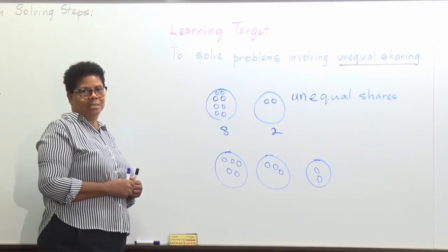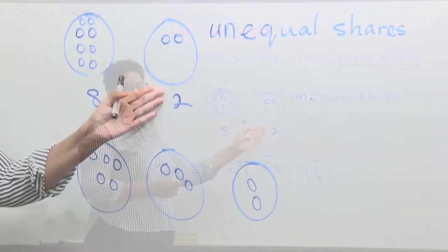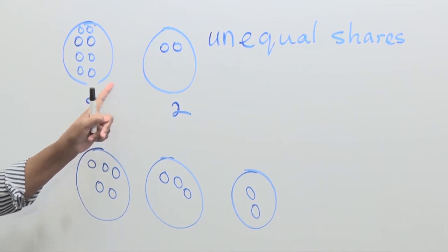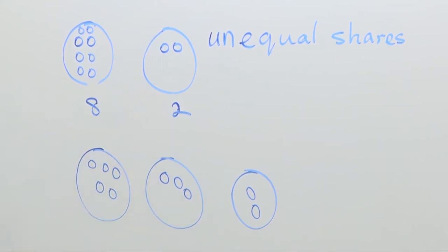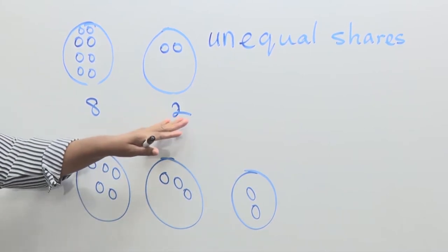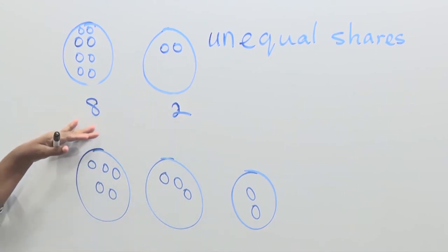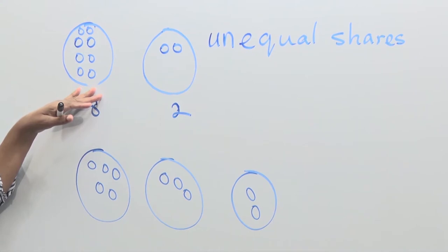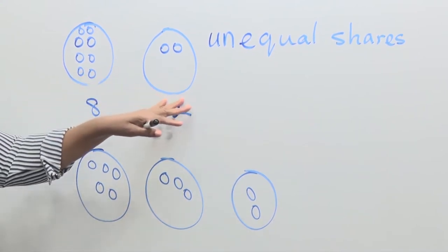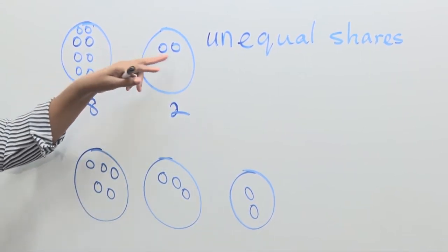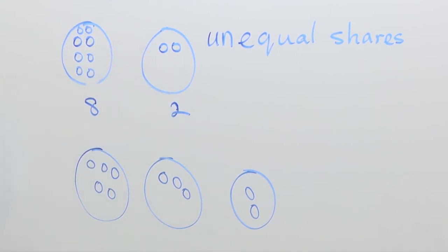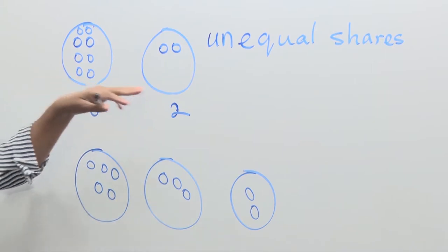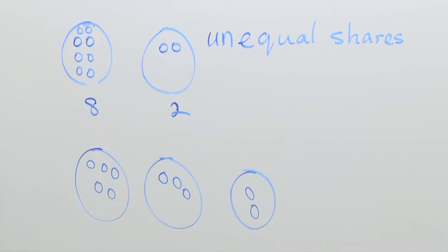We can describe unequal shares. Let's look at these 2 shares that we have at the top. We can say that the share of 8 is 6 more than the other share. We can also say this share is 6 less than that share. We can even say that this share is 4 times as many as the other share, because 4 times 2 gives us 8. We can even say that this share is 3 times as many as, or 3 times more than, the other share.